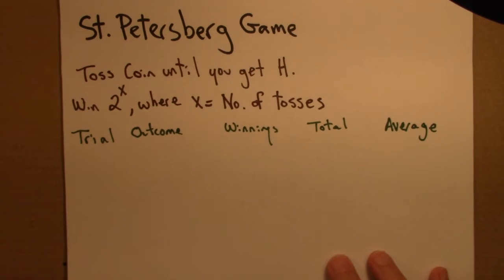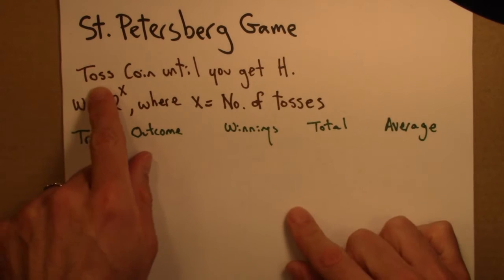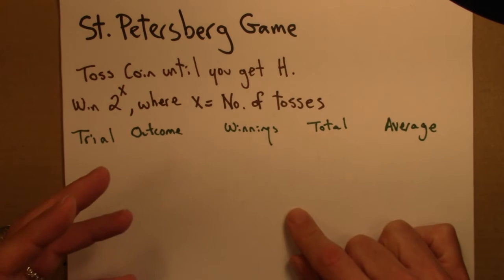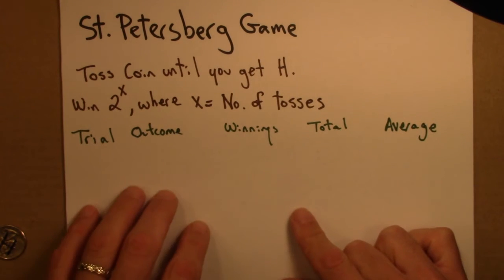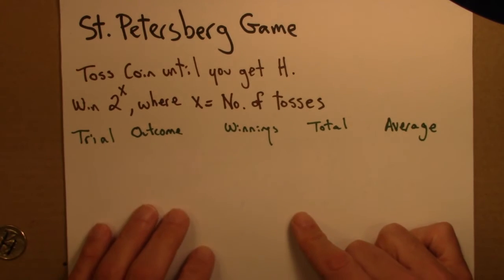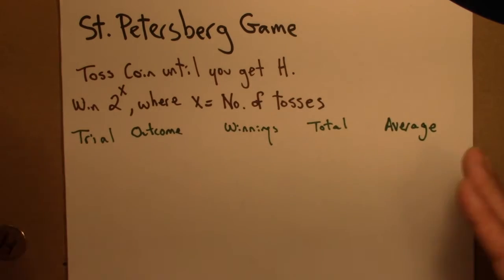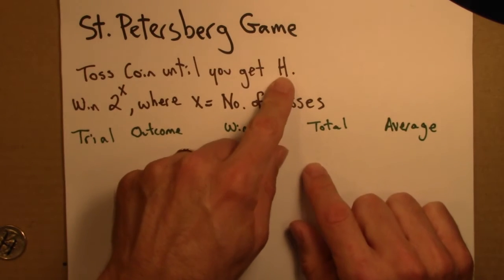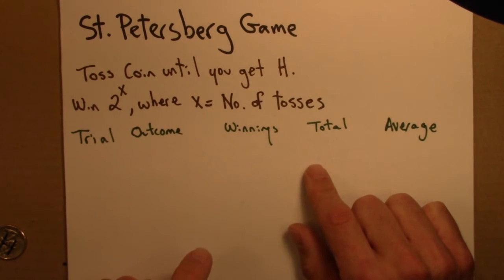Here's how this game is played. You toss the coin until you get a heads — until it comes up heads. So that could take one toss, it could take a bunch of tosses. You do it until you get a success, here you do it until you get an H. And then the amount of money you win is 2 to the x, where x was the number of tosses.